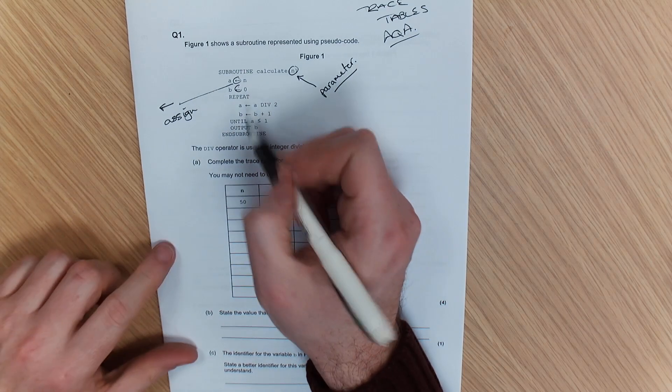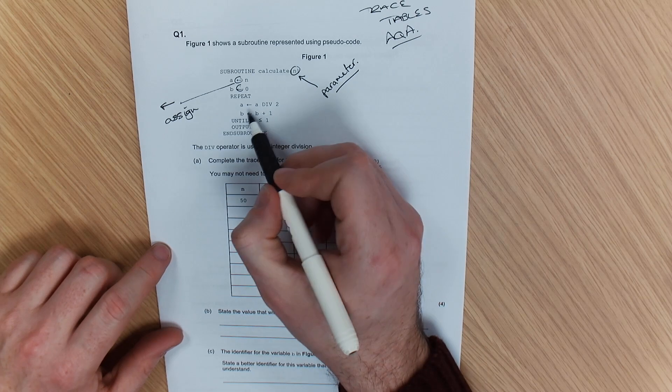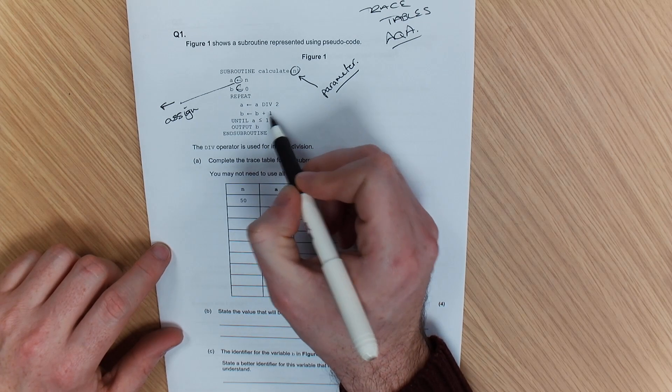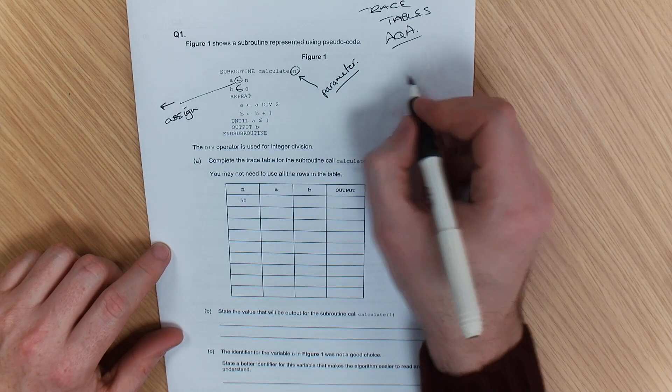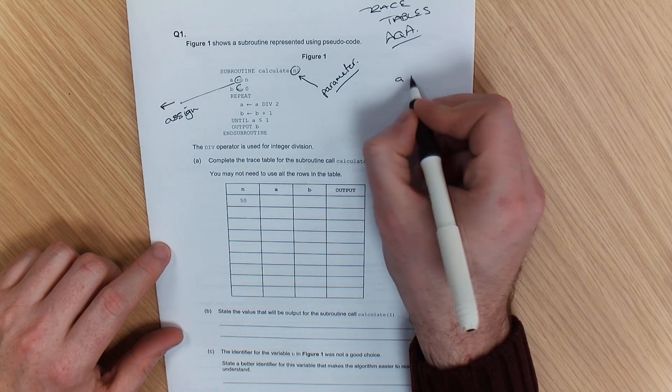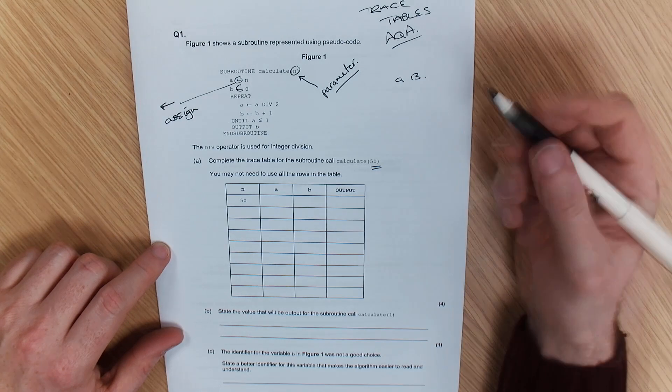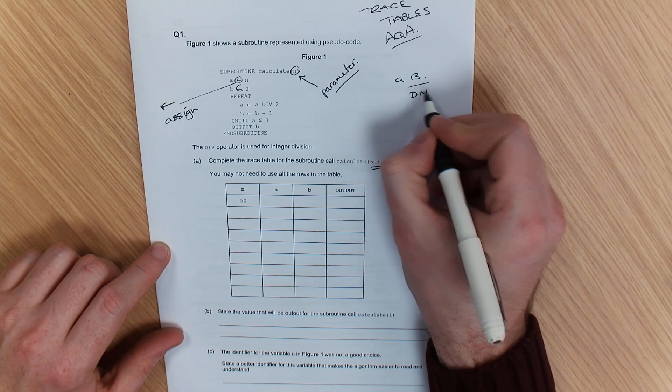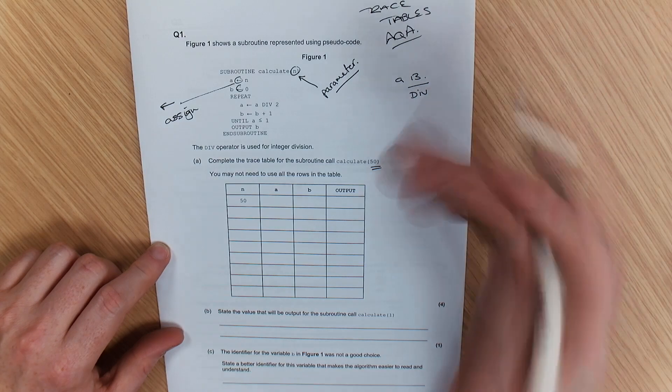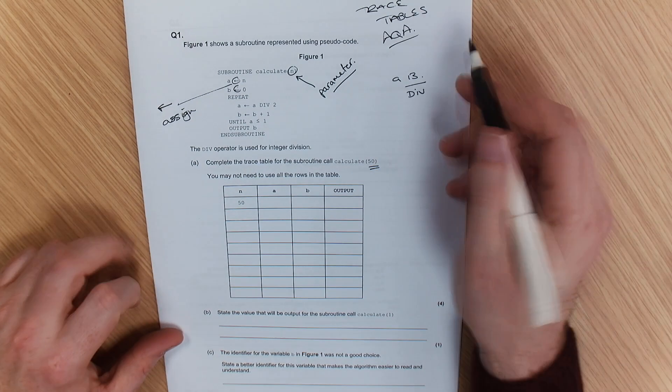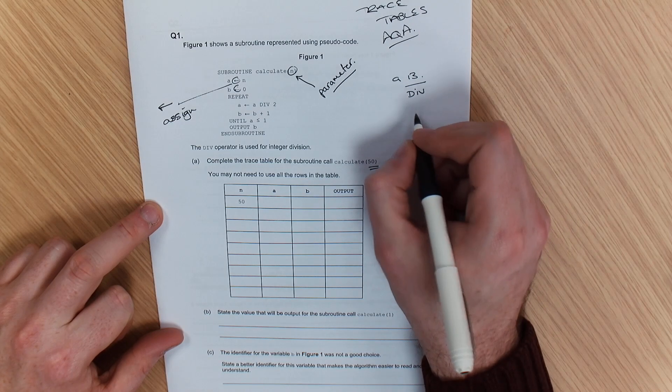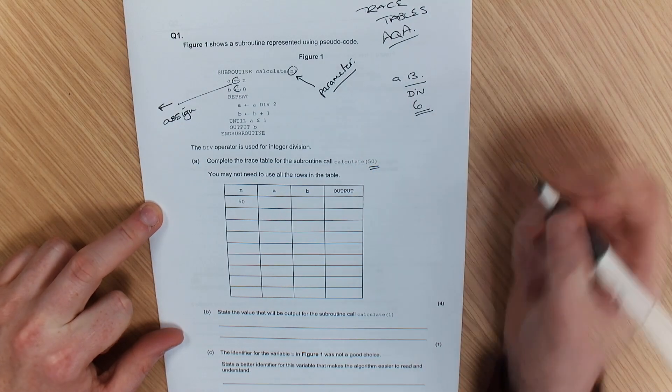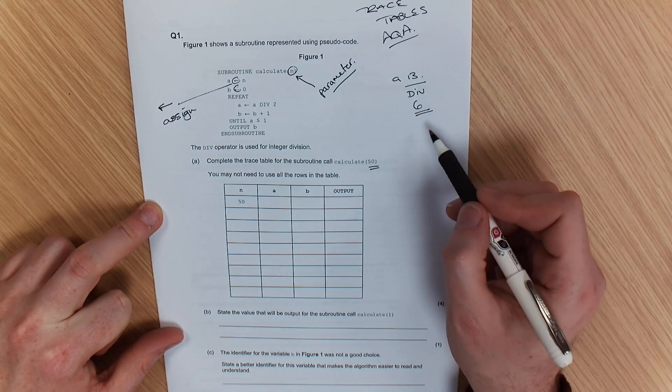Now we're going to repeat code. So A is going to be div 2. B is plus 1. For example, you had A, 13. If that was divided by 2, you actually use div as a way to round it down to a whole number. So 13 divided by 2 wouldn't be 12.5. In this case, it would be 6. So just be aware of that.